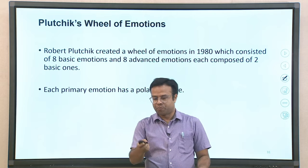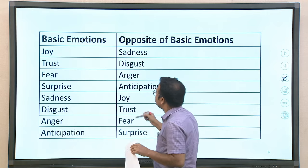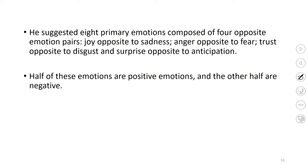Each primary emotion has a polar opposite. Plutchik's eight basic emotions are joy, trust, fear, surprise, sadness, disgust, anger, and anticipation. The polar opposite of joy is sadness; the opposite of trust is disgust; the opposite of anger is fear; and the opposite of surprise is anticipation. So four pairs of polar opposites make eight emotions in total. He suggested eight primary emotions composed of four opposite emotional pairs, with half being positive emotions and half negative.